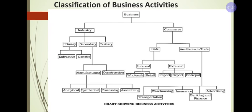First we will look at the industry part. Industry can be further classified into three categories: primary industry, secondary industry, and tertiary industry. Primary industry is further classified as extractive and genetic industry. Secondary industry can be classified as manufacturing industry and construction industry.